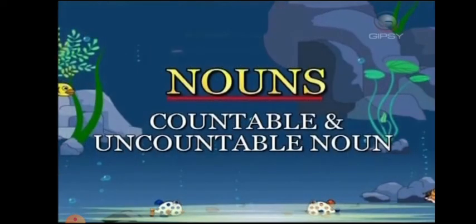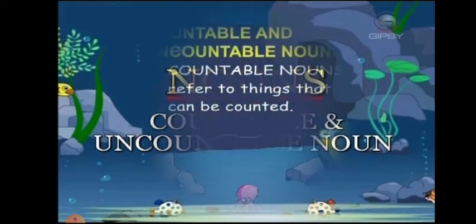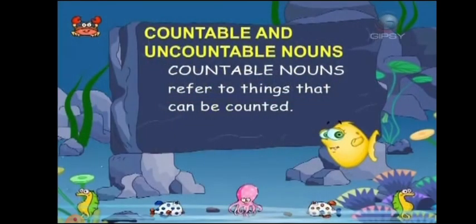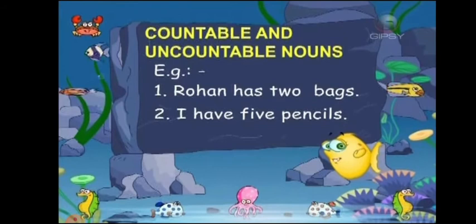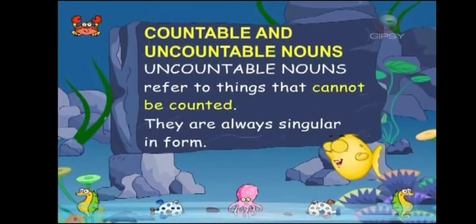Countable nouns refer to things that can be counted. For example: 'Rohan has two bags' and 'I have five pencils.' In the above sentences, the words bags and pencils are countable nouns because we can count things like bags and pencils. So these are countable nouns.